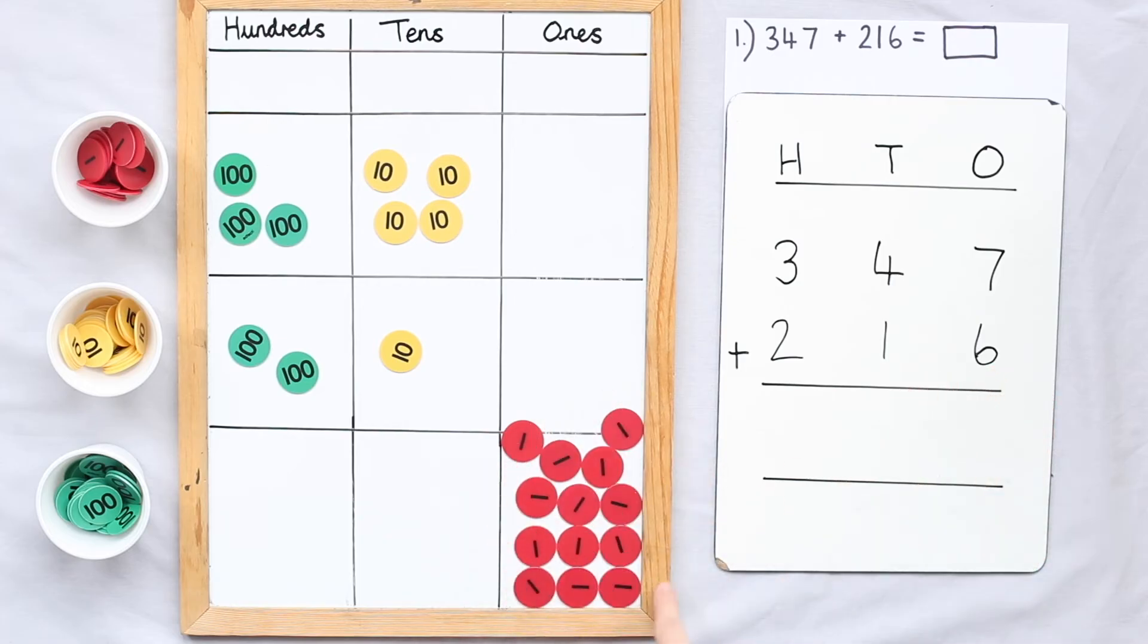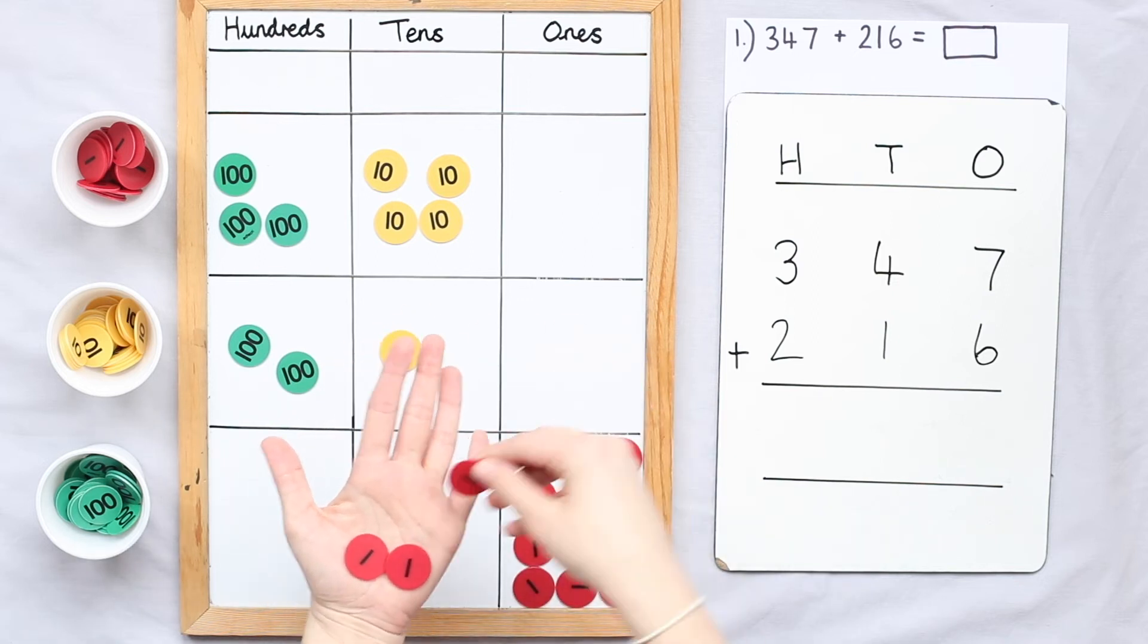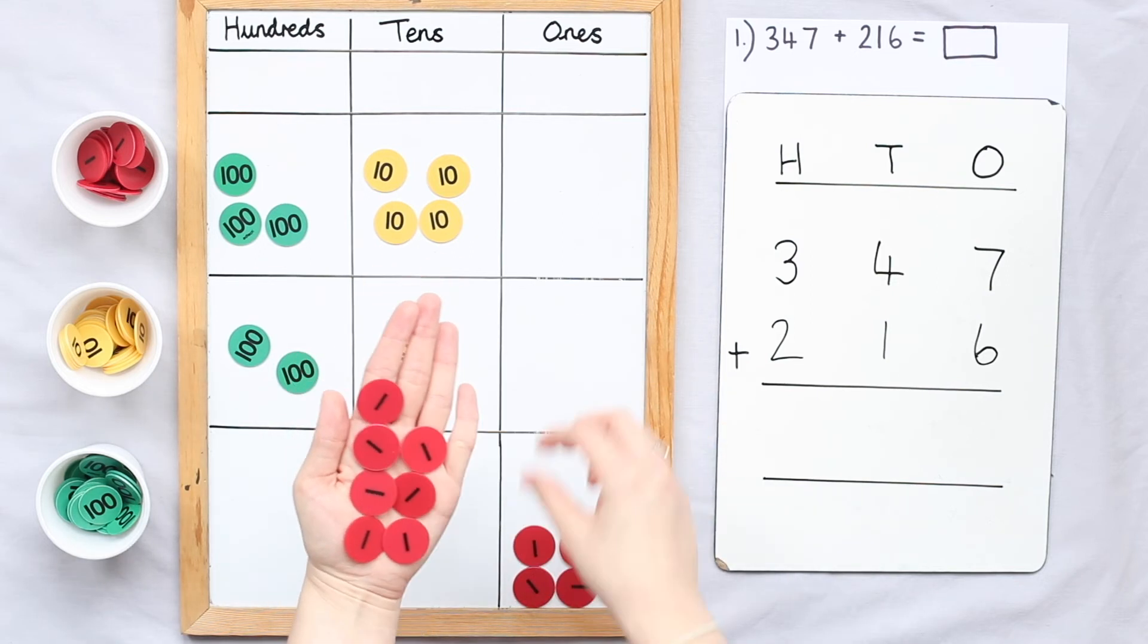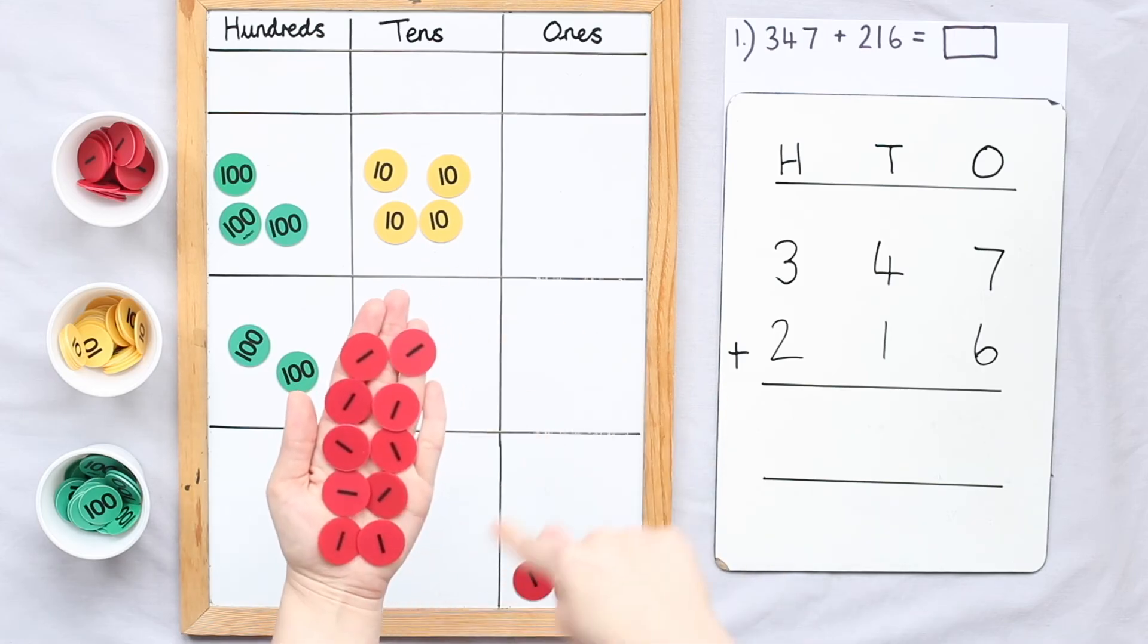Here, thirteen is made of thirteen ones, but I also know the number thirteen can be made of one ten add three ones. I know that ten ones equals one ten. So I'm going to regroup my ten ones, exchanging ten ones for one ten.